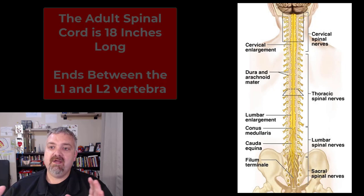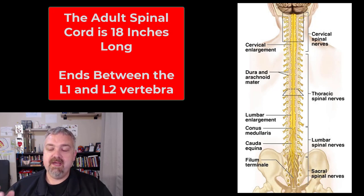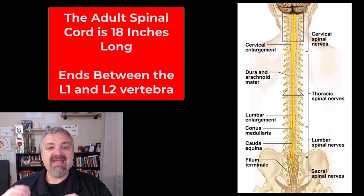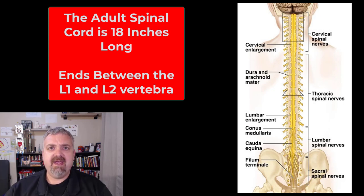We'll start by looking at just the gross anatomy of the spinal cord. The adult spinal cord is about 18 inches long and around a half inch wide.